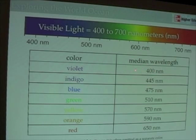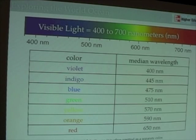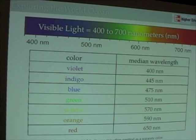From shorter wavelengths to longer wavelengths of visible light, we have violet, indigo, blue, green, yellow, orange, and red. I expect you to know this — to be able to tell me the shortest and longest wavelength colors. Maybe in high school you learned ROY G BIV, R-O-Y-G-B-I-V.